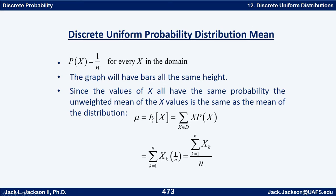You can see that mu — the expected value of x — is the sum of x times the PDF of x, the probability of x. But since the probability of x is 1/n every time, that doesn't change as k changes. It can be factored out front and we have the sum of the x's over n, which is just the plain mean of all the x values.